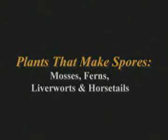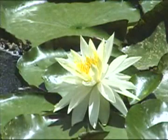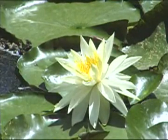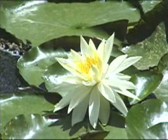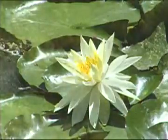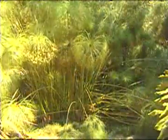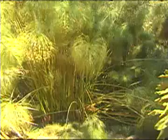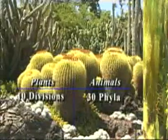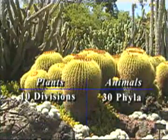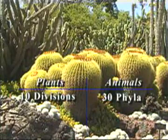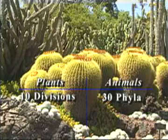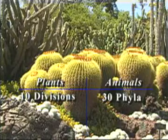There are approximately 300,000 different species of plants, and biologists have classified them in much the same way they have classified animals, which is according to their shared traits. In all, there are only 10 basic groups or divisions in the plant kingdom, compared to the 30 phyla into which animals are classified.